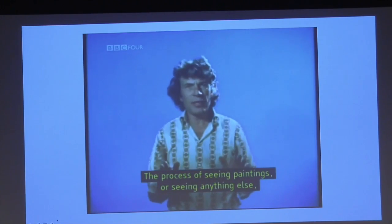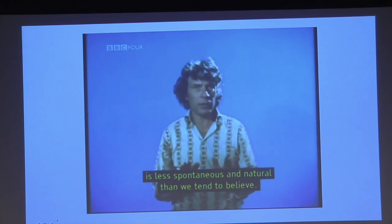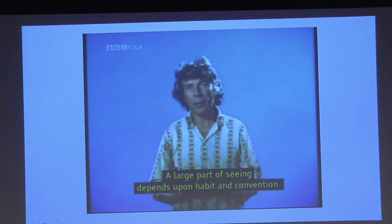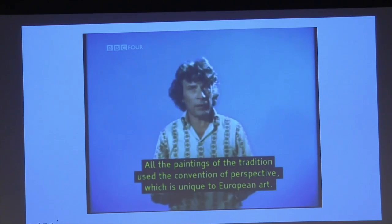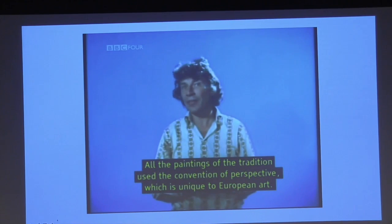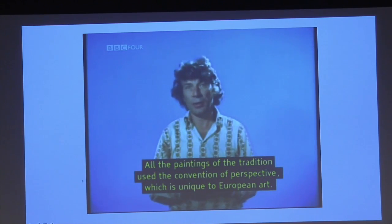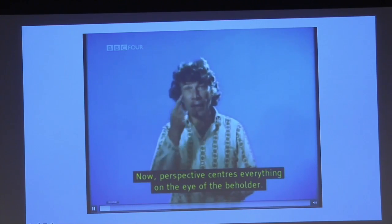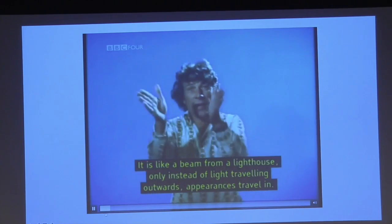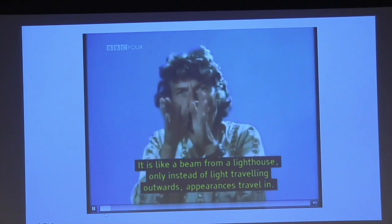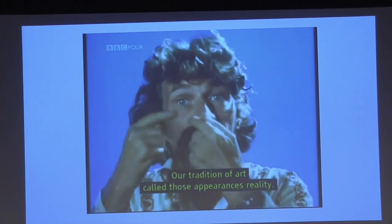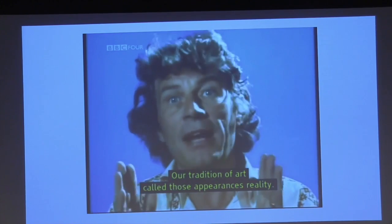The process of seeing paintings, or seeing anything else, is less spontaneous and natural than we tend to believe. A large part of seeing depends upon habit and convention. All the paintings of the tradition used the convention of perspective, which is unique to European art. Now perspective centers everything on the eye of the beholder. It is like a beam from a lighthouse. Only instead of light traveling outwards, appearances travel in. And our tradition of art called those appearances, reality.